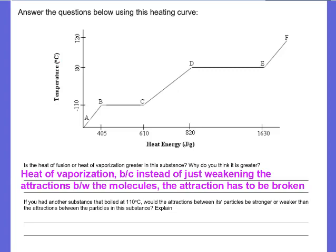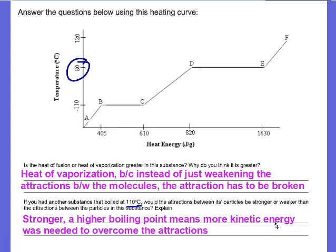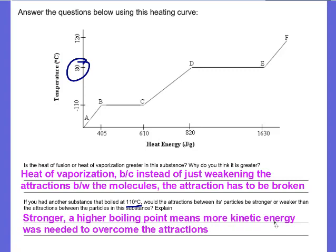I'm going to try the next one. Restart when you're done. So, this substance boils at 80 degrees. But if it was boiling at 110, then that means that it must have a stronger attraction. Because a higher boiling point means that more kinetic energy was needed to overcome those attractions. The higher the melting or boiling point, the stronger the attractions.